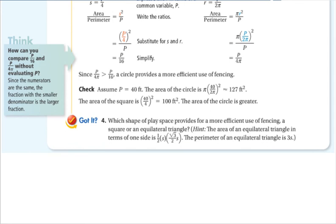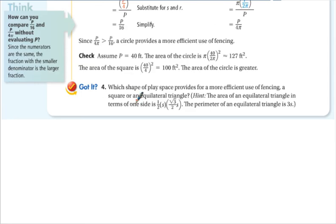Which shape of play space provides a more efficient use of fencing, a square or an equilateral triangle? The area of an equilateral triangle, in terms of one side, is one half times that side times the square root of 3 over 2, which you might recognize from special right triangles from geometry. But that's the formula for that area. The perimeter of an equilateral triangle is of course 3S. So you're going to relate those two and come up with an answer there for got it number 4. Go ahead and pause the video and see if you can tell me which one would be the most efficient use of fencing.